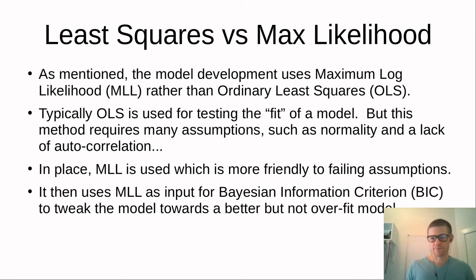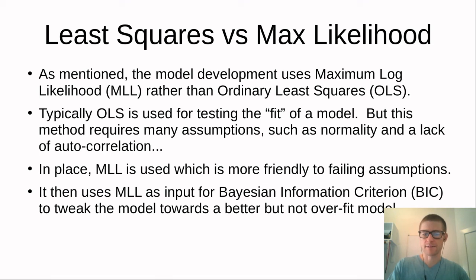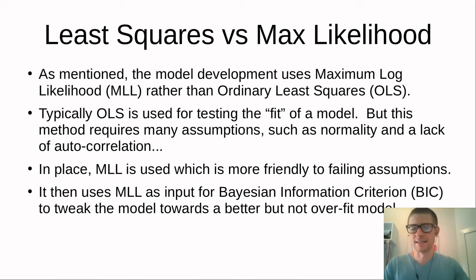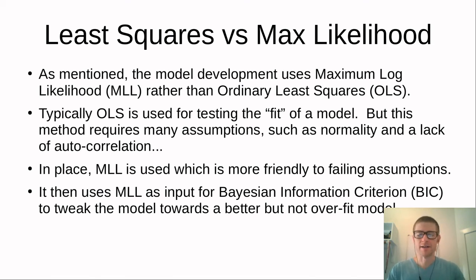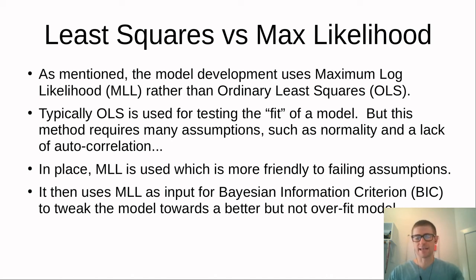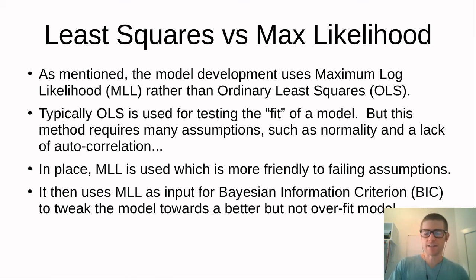Ordinary least squares has assumptions built in — specifically that the data fits a normal distribution and that there is no autocorrelation — both of which are violated in what we're doing here. Maximum log likelihood provides more flexibility around these assumptions. The output of the ML step is placed into the Bayesian Information Criterion (BIC), and the model is tweaked iteratively until the threshold is met, avoiding overfitting.